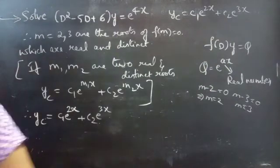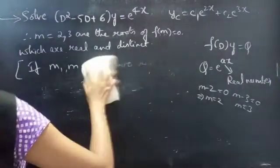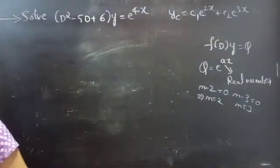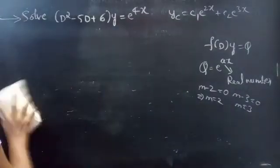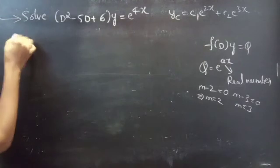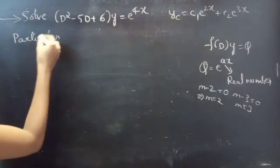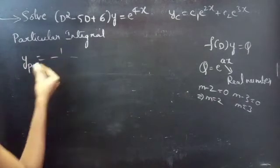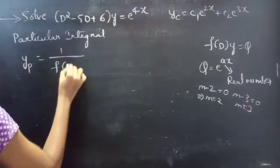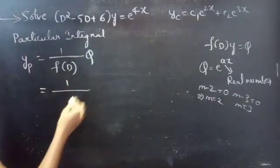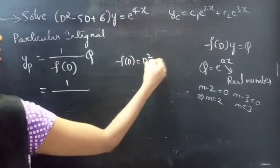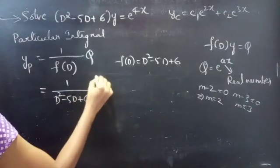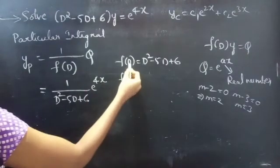Now we need to find the particular integral. The particular integral yp = (1/f(D))·Q, where f(D) = D² - 5D + 6 and Q = e^(4x). So we write yp = 1/(D² - 5D + 6) · e^(4x). Now we just replace D by 4.